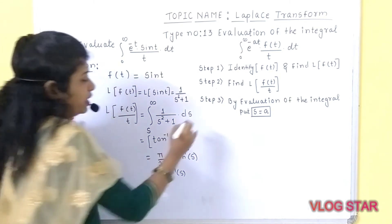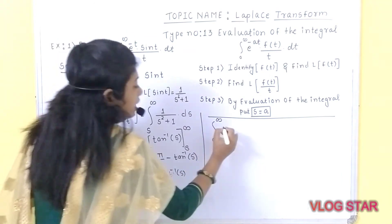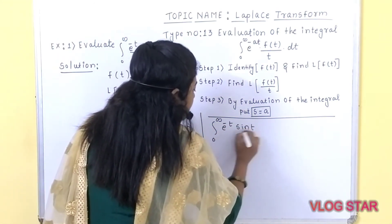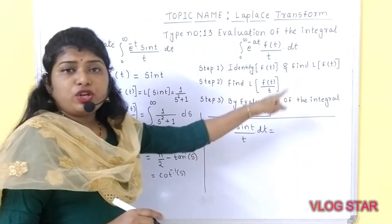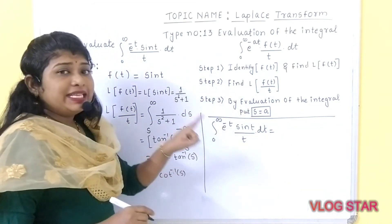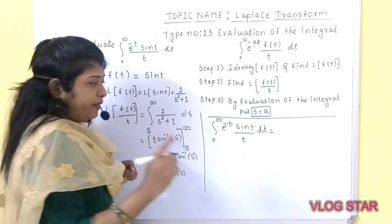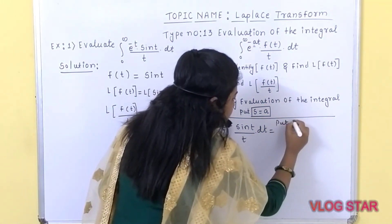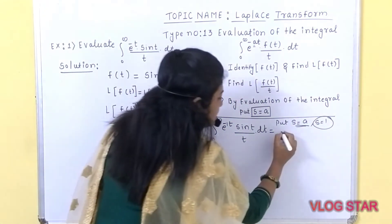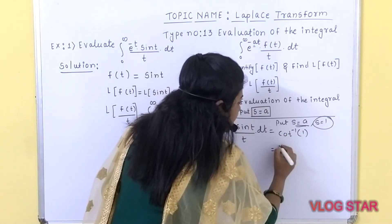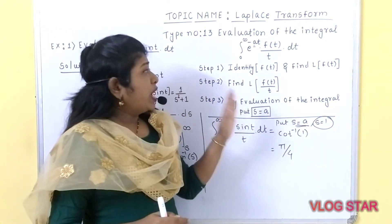As per the given example, we have to evaluate integration of 0 to infinity of e raised to minus t sin t upon t into dt. By evaluation of the integral, you need to substitute s is equal to a. In this case, a is nothing but equal to 1, so put s is equal to 1. The answer you will get is cot inverse of 1, which is nothing but equal to pi by 4.